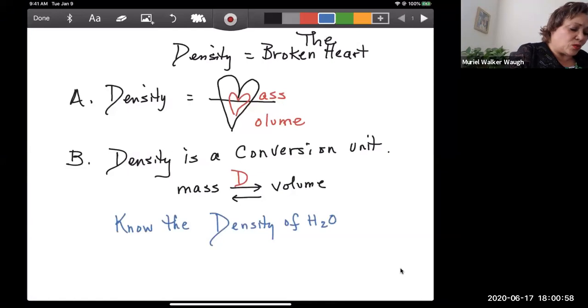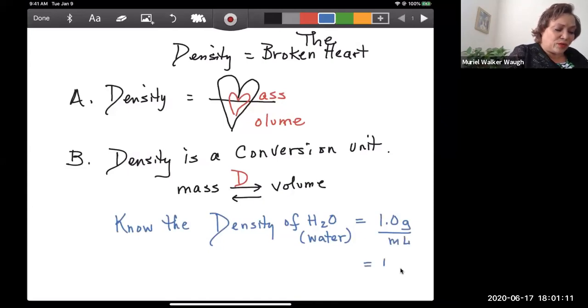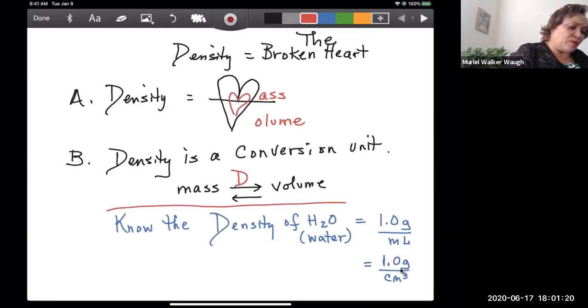H2O is what water, you know, dihydrogen monoxide, and that is going to be equal to 1.0 grams per milliliter, which is the same thing, now that you've looked at the last module, 1.0 grams per cubic centimeter. This is the only thing I want you to memorize with density. Memorize it.